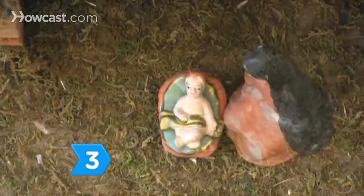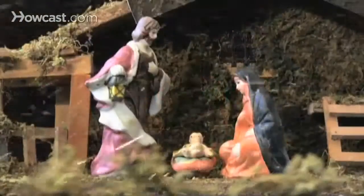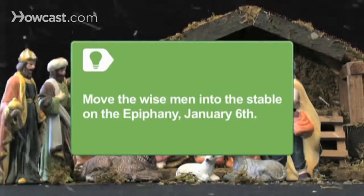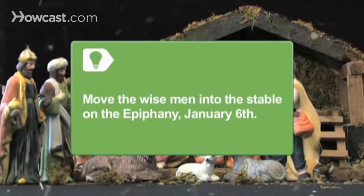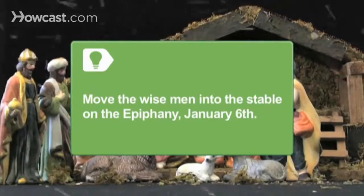Step 3. Place Mary and Joseph on either side of the manger. Usually, Mary is the closest. Step 4. Set the shepherds and the wise men in concentric circles around the stable. As the wise men were thought to be the last to arrive, put them the furthest away in the nativity scene. Move the wise men into the stable on the Epiphany, on January 6th.